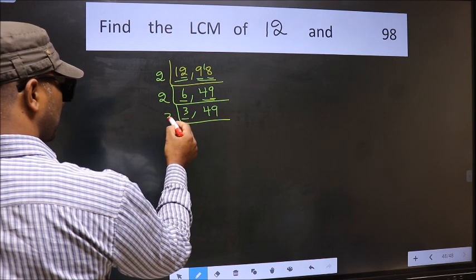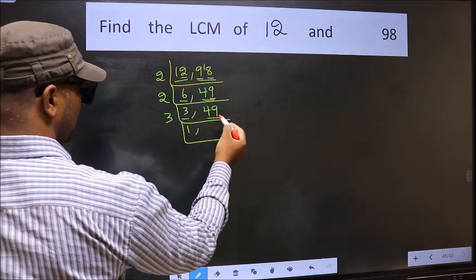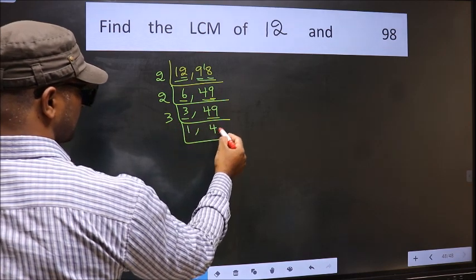Now here we have 3. 3 is the prime number so 3, 1 is 3. The other number 49 is not divisible by 3. So we write it down as it is.